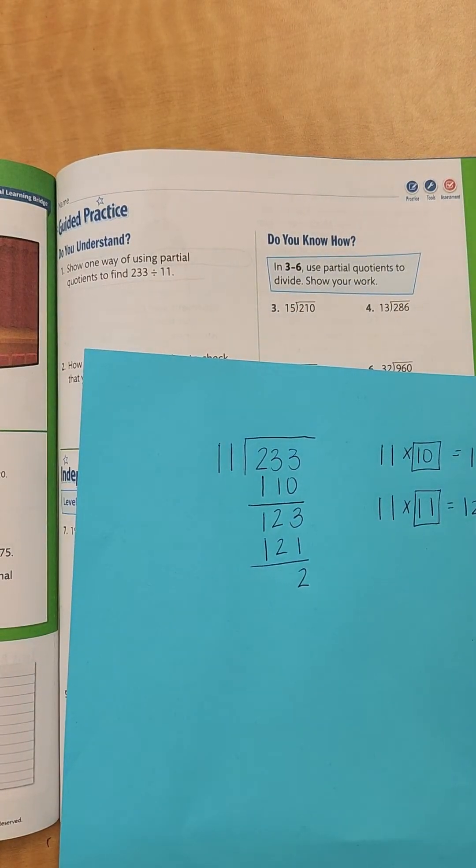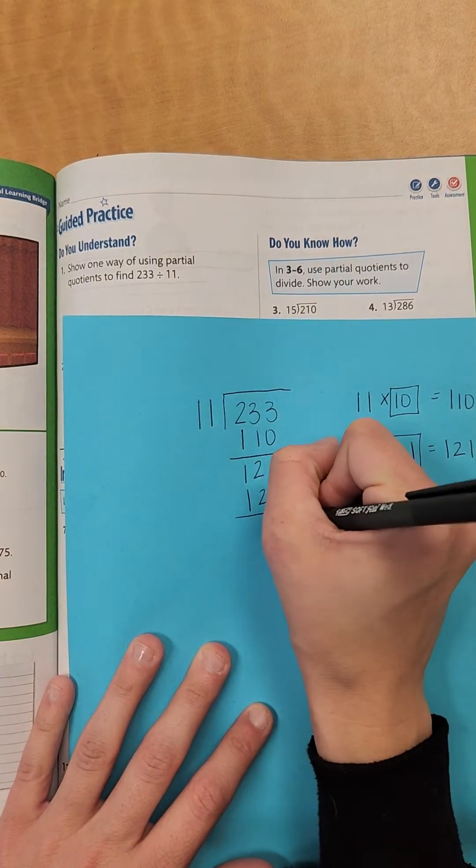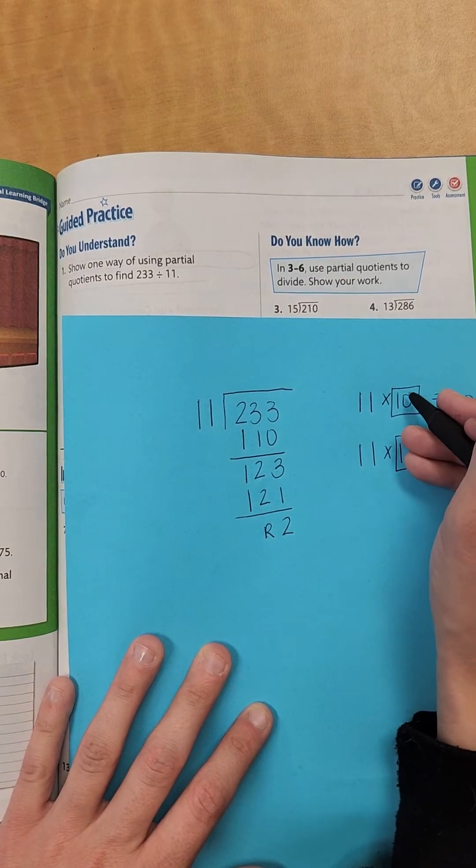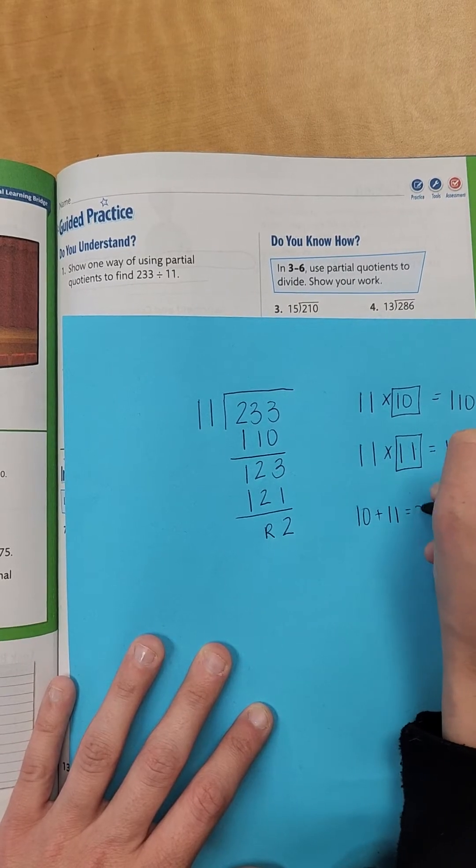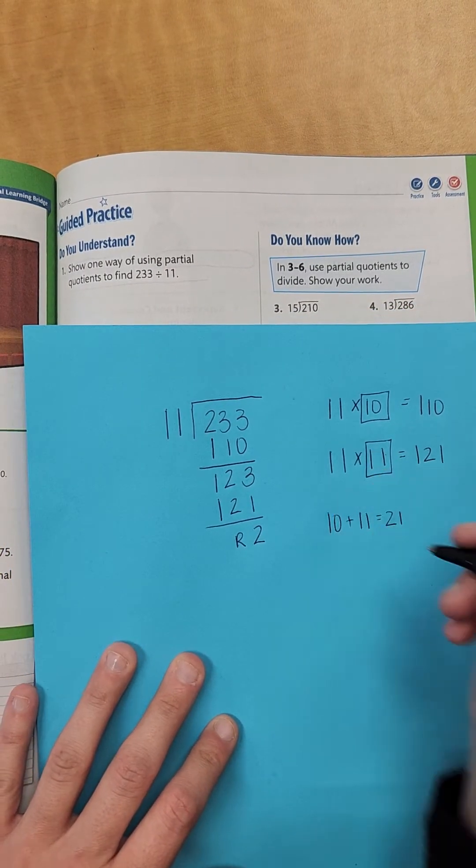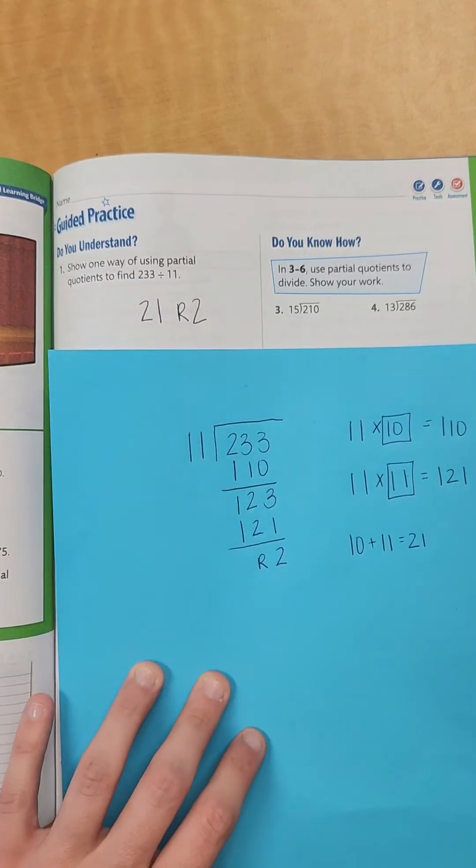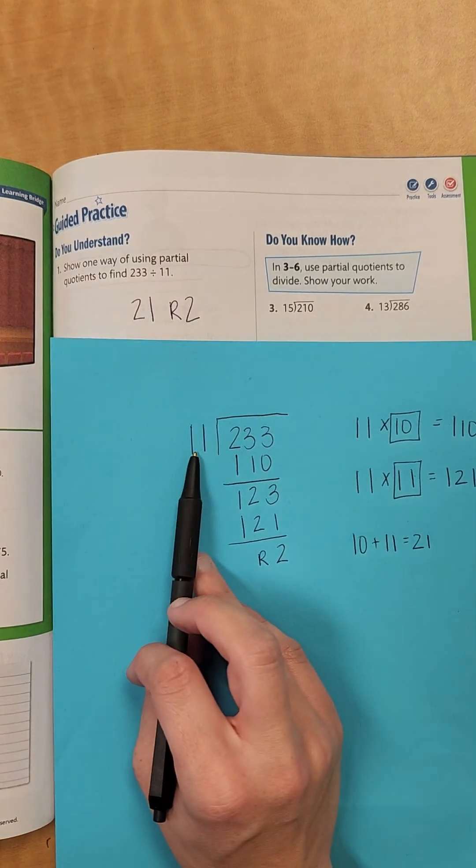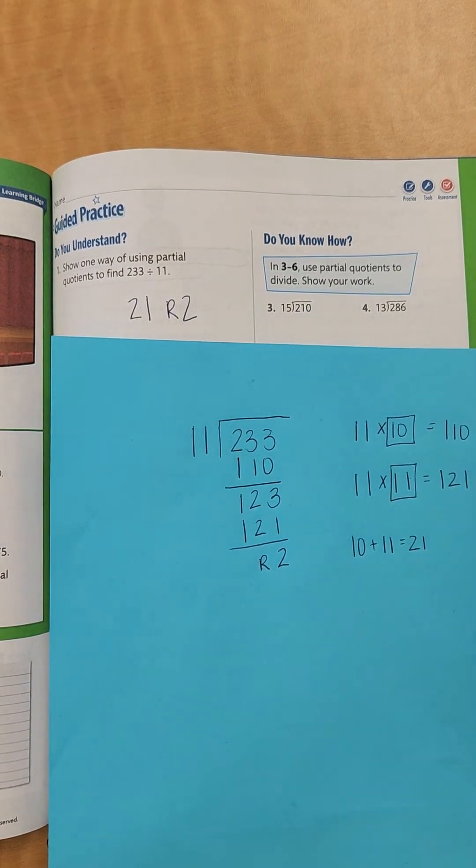Now can 11 go into 2 at all? No. So that would be our remainder. So we would have a remainder of 2. So our quotient though is 10 plus 11, which gives you 21. So you have 21 with a remainder of 2, because sometimes you will end up with a remainder. Now if your remainder is bigger than your original number, you know you did something wrong. You got to go back and double check, because your remainder can't be bigger than your original number.